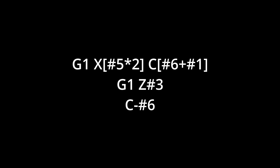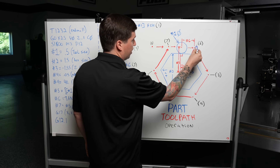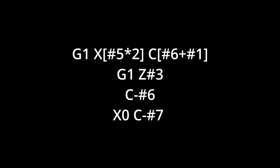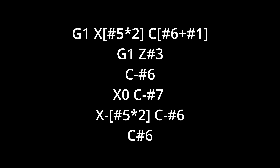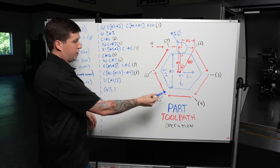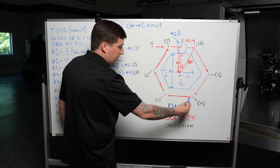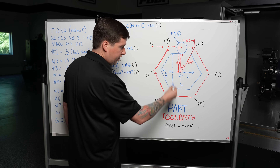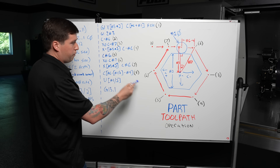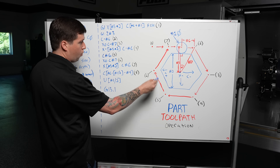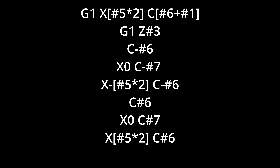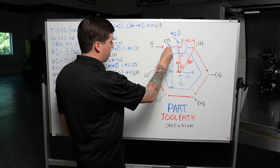Next I go to C of minus pound six, and that's right here. From there I go to X of zero, C of minus pound seven. From there, X of minus pound five times two, C of minus pound six — that takes us to the next corner. From there, C of pound six. I don't have to put X on each line — I'm already at X of minus pound five times two, so I just need to move in C. Then X of zero, C of pound seven. And next, X of pound five times two, C of pound six — that gets me to the last corner.